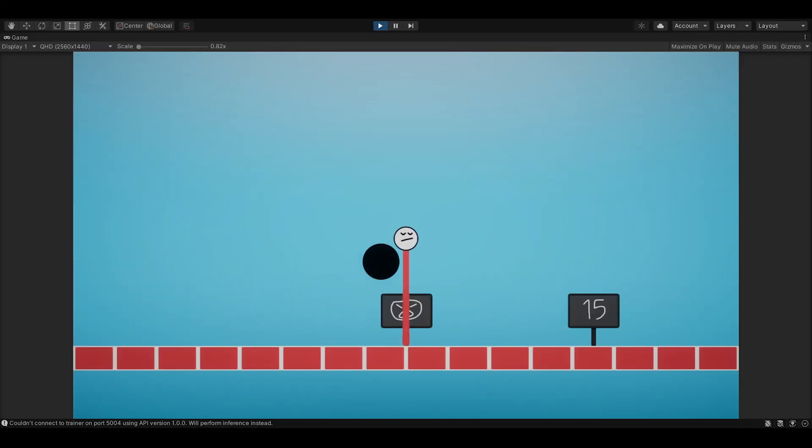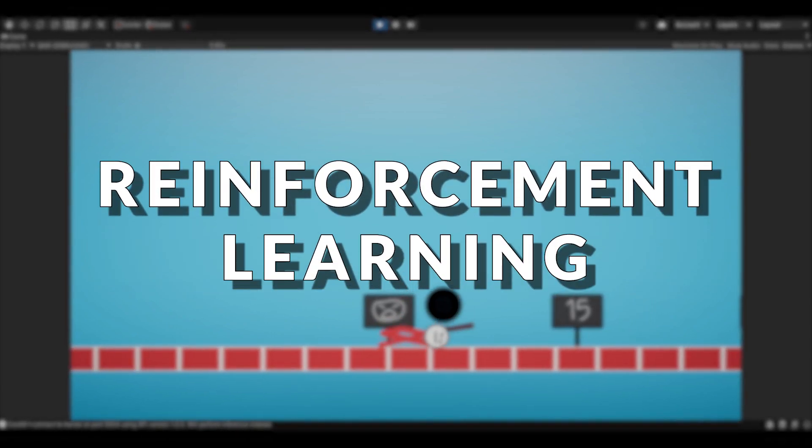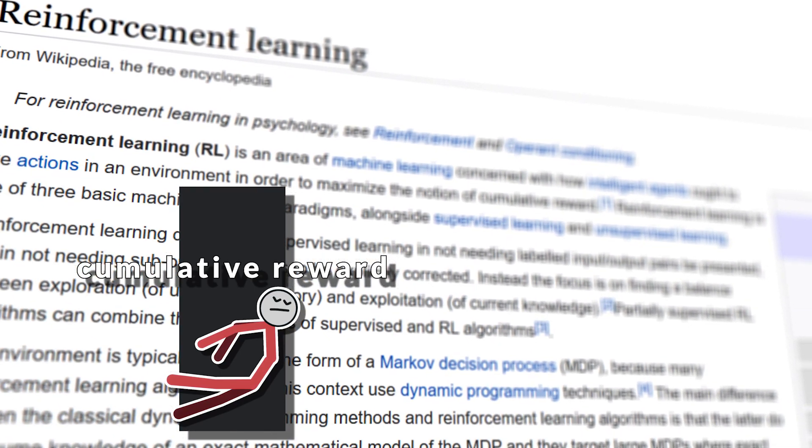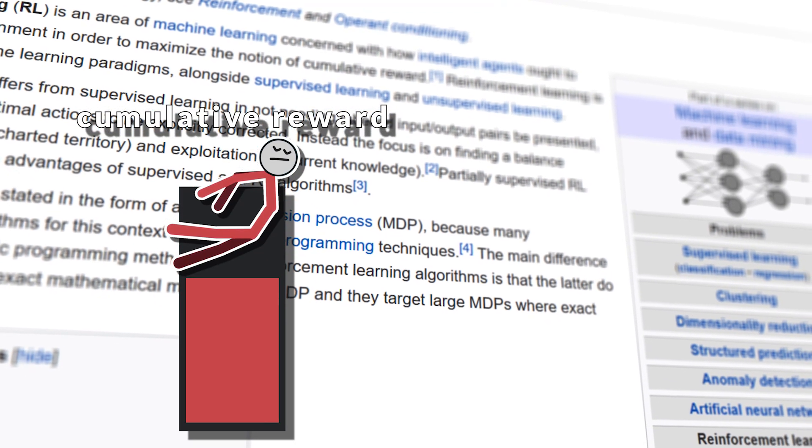Now you probably are wondering, how is he going to learn how to solve this course? And the answer to that is reinforcement learning. Reinforcement learning is a method of machine learning in which you give the AI a reward every time it makes something good, and a punishment every time it makes something bad.